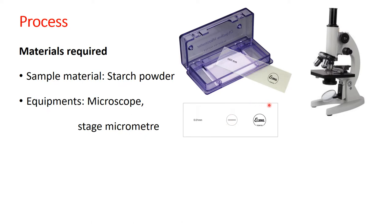This microscopic slide with an etched scale is called a stage micrometer. Its least count is 0.01 mm — meaning the distance between two consecutive neighboring lines is 0.01 mm. That is the least count of the stage micrometer.